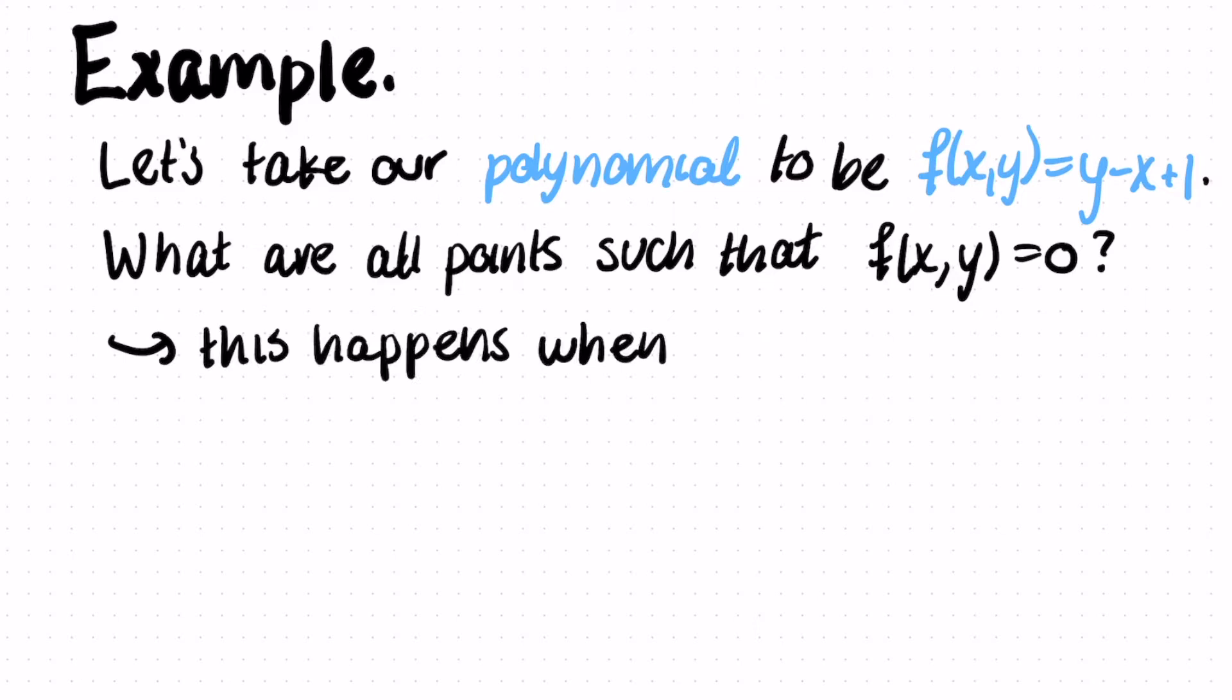This happens whenever zero is equal to y minus x plus one. And if we just rearrange the equation, we can see that this is y equals x minus one, which is just a line.